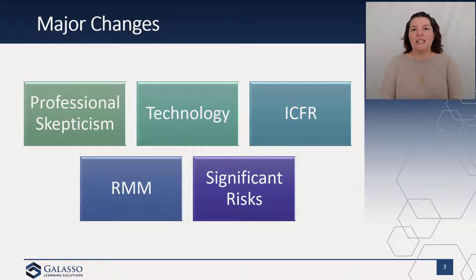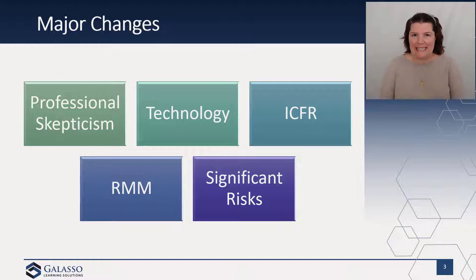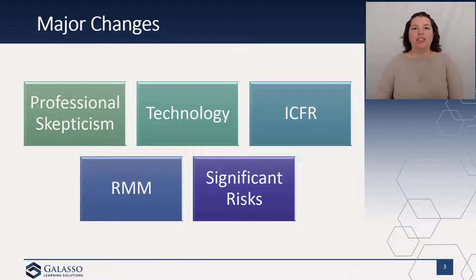A focus we saw in SAS 143 as well as 142 is this focus on contradictory evidence. Very often, we like to explain it away or say things like 'that was an isolated incident' or 'that was a one-off,' instead of really understanding contradictory evidence. Even during risk assessment, you may find contradictory evidence.